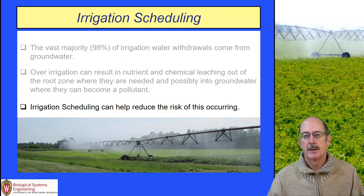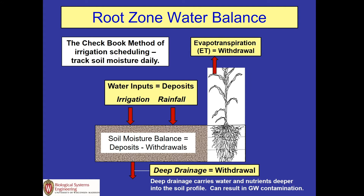Irrigation scheduling is one tool that can help you do that. It uses a root zone water balance to track the amount of water that's in the plant root zone. One name for this is called the checkbook method, because you can think of it like a checking account where you have withdrawals and deposits.